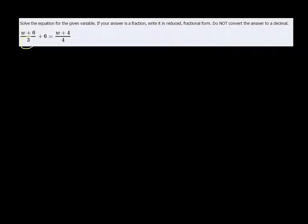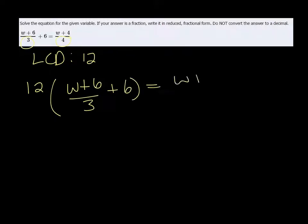So we've got a 3 and a 4. The LCD, the lowest common denominator of that, would be 12. So if we multiply both sides of the equation by 12, we'll see that we'll get rid of all of those fractions.